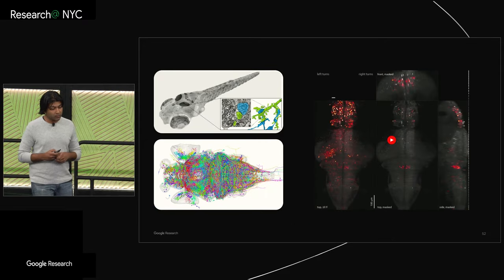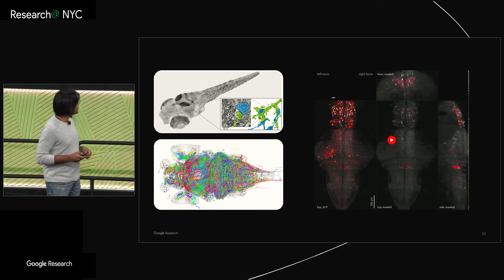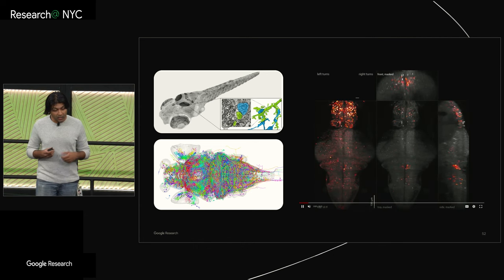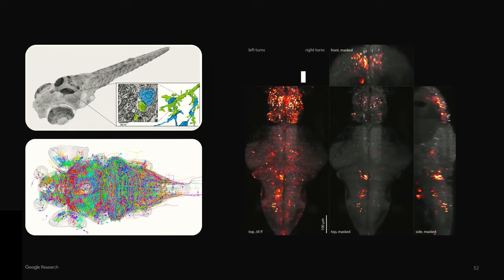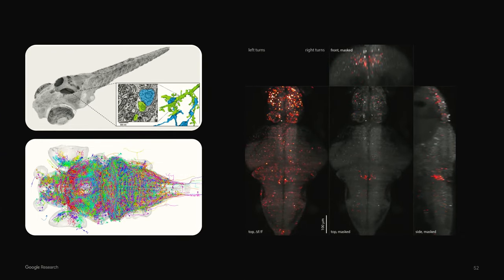We're also working with our collaborators to bring together multiple modalities of data, combining, for instance, connectomes with real-time recordings of the neuronal firing in a larval zebrafish as they respond to their environment. This highly challenging research will enable us to understand how the connectivity of the brain drives its function and behavior and ask ambitious questions like whether a machine learning program could help predict the activity of a neuron or neural circuit.